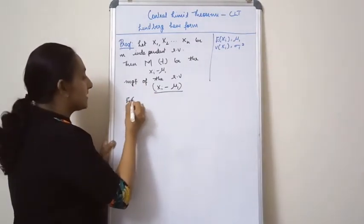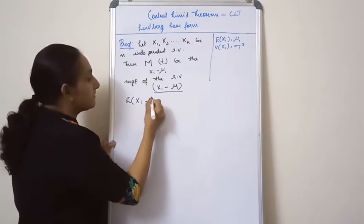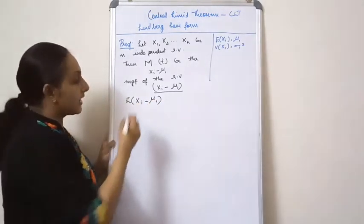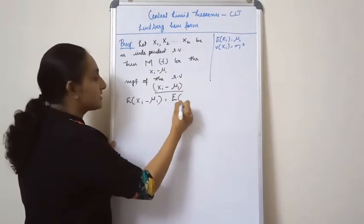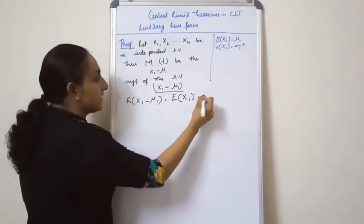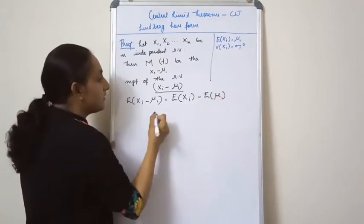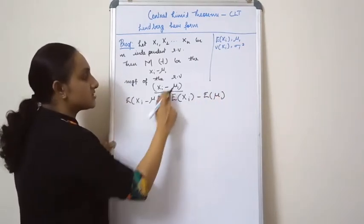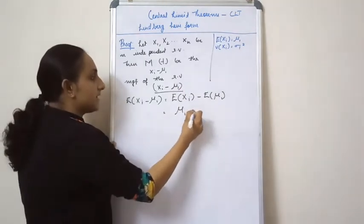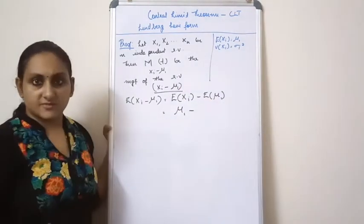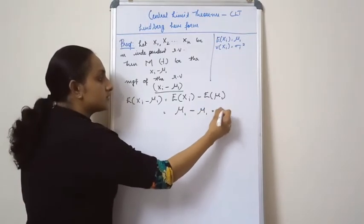Let us find out the expectation of xi - μ₁. E[xi - μ₁] = E[xi] - E[μ₁]. We know E[xi] = μ₁, and E[μ₁] = μ₁ itself, so that equals 0. Therefore, the expectation of this random variable xi - μ₁ is 0.